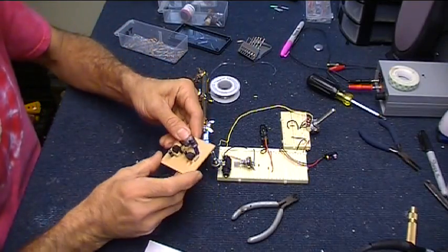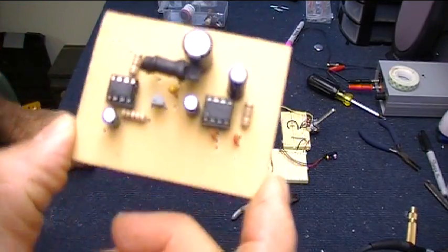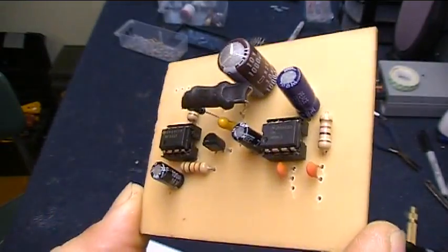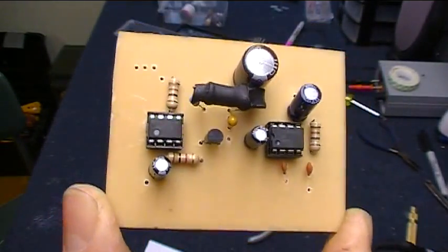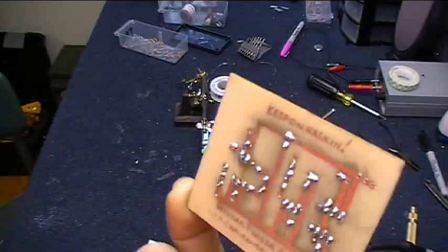And that is that. All components soldered on the board. Got the chips in place. Now we just need to wire up the externals and get them mounted in the box.